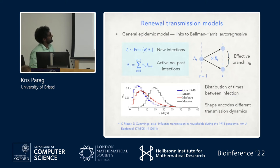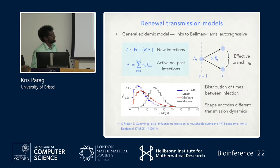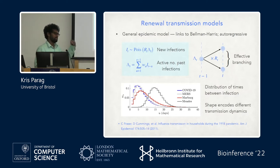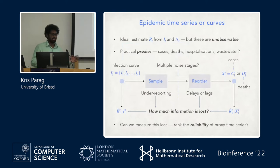Simply put, infections at time t are distributed according to the reproduction number and a lambda(t) term, which can be considered the circulating infections that could spread forward. Lambda(t) is composed as a convolution of past infections with w, where w is a generation time distribution. Its shape describes different types of epidemics — w(u) means it takes u time units for a primary infection to lead to a secondary infection. Lambda(t) is then multiplied by R(t).